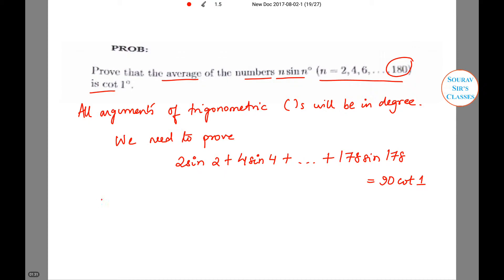The above is equivalent to: 2(2 sin 2° sin 1°) + 2(2 sin 4° sin 1°) + ... + 2(2 sin 178° sin 1°) equals 90 cos 1°.